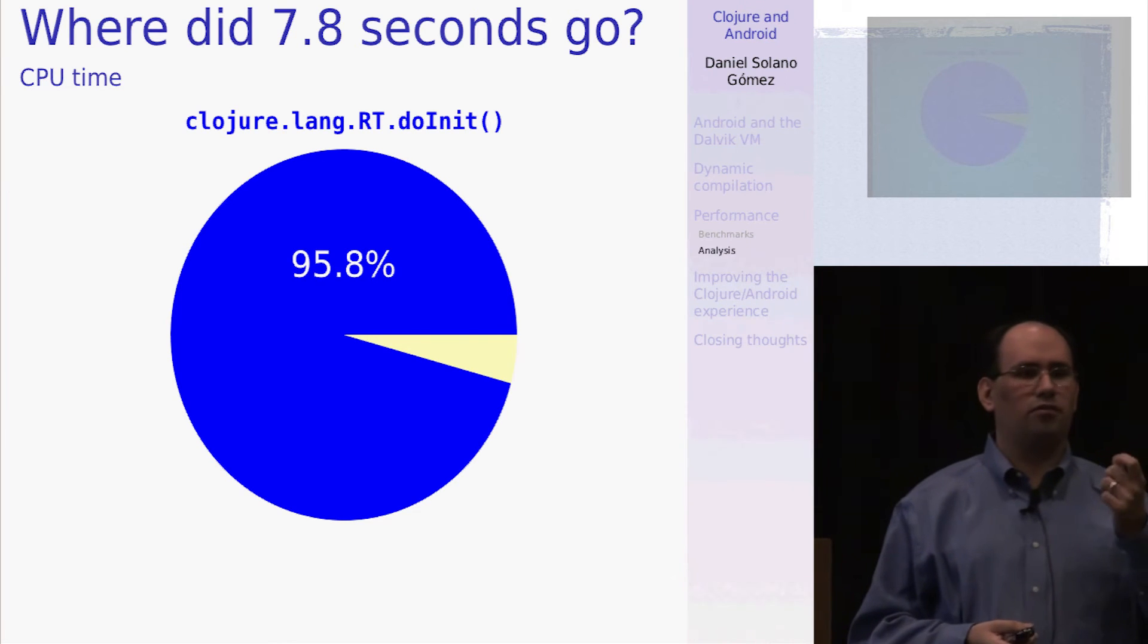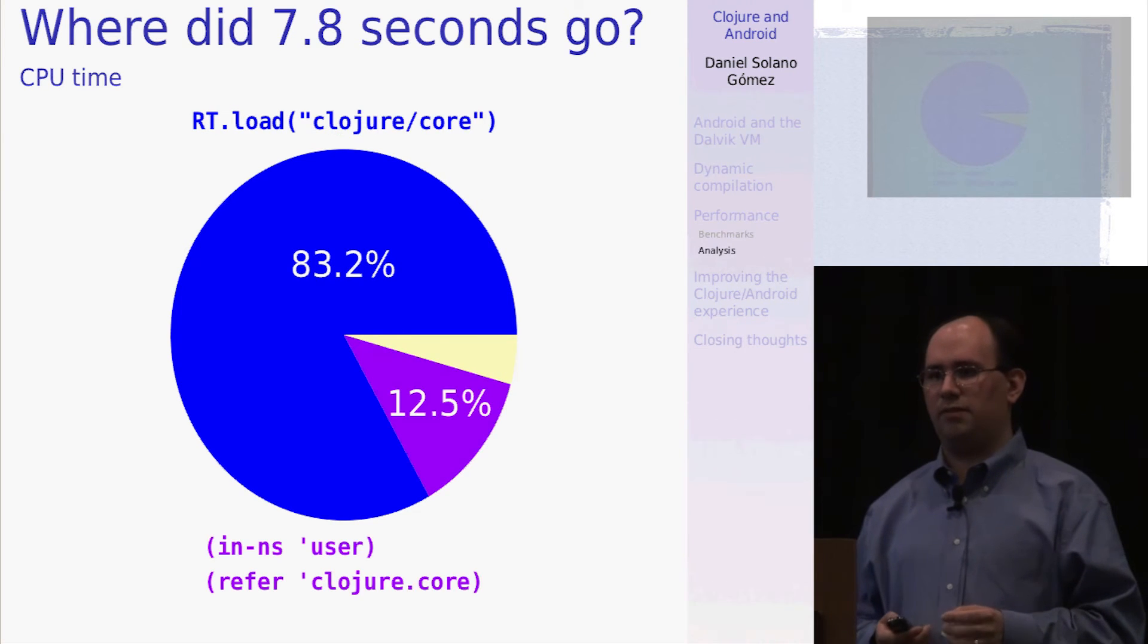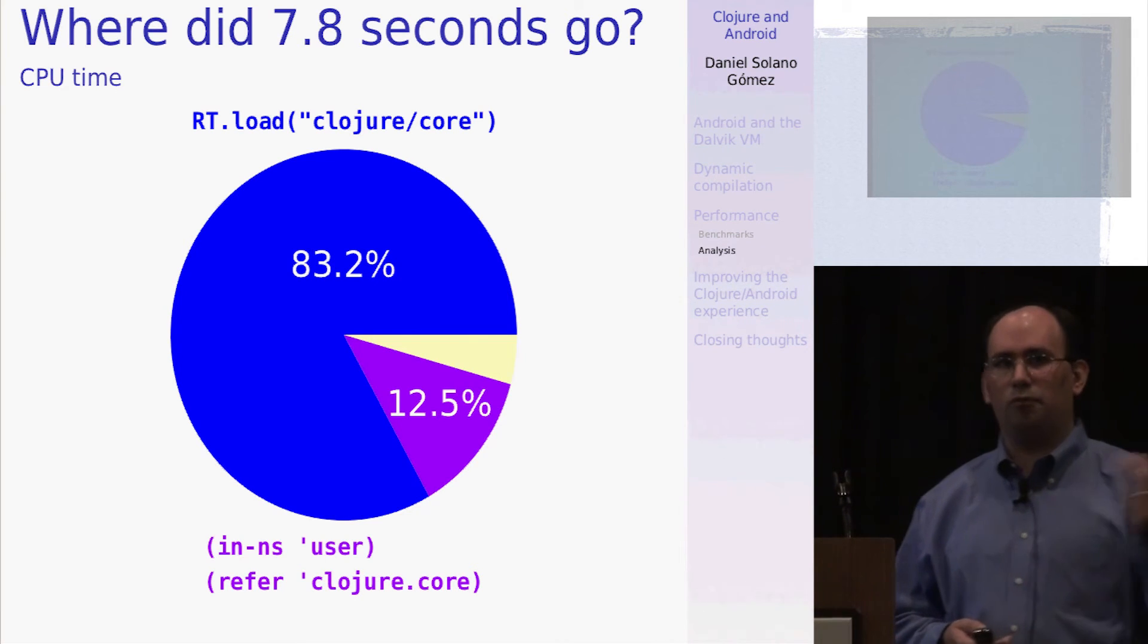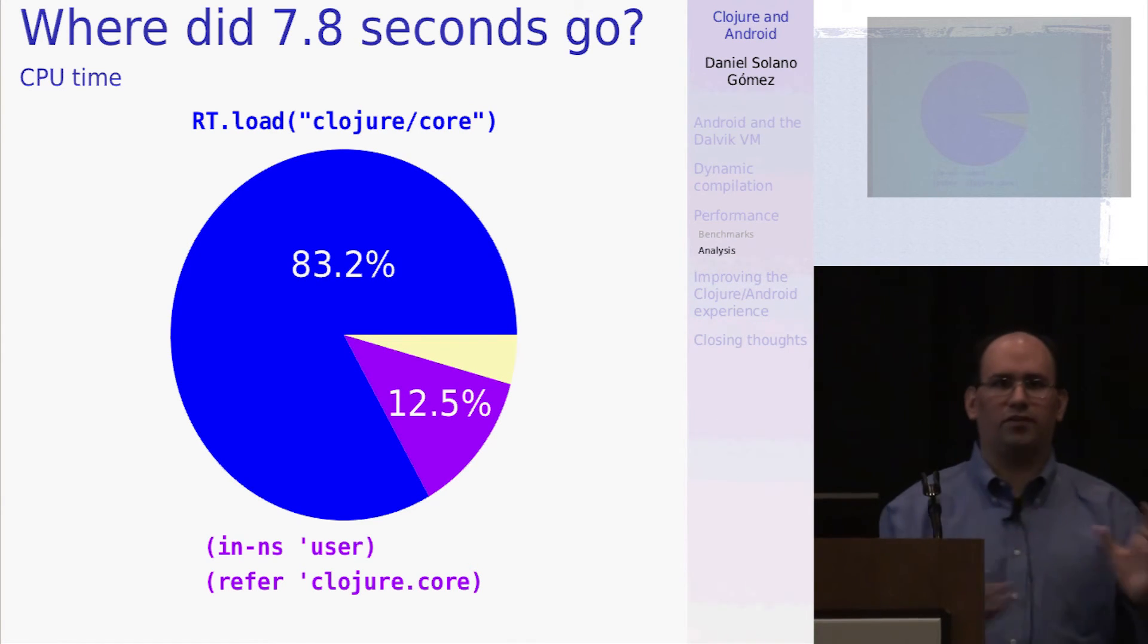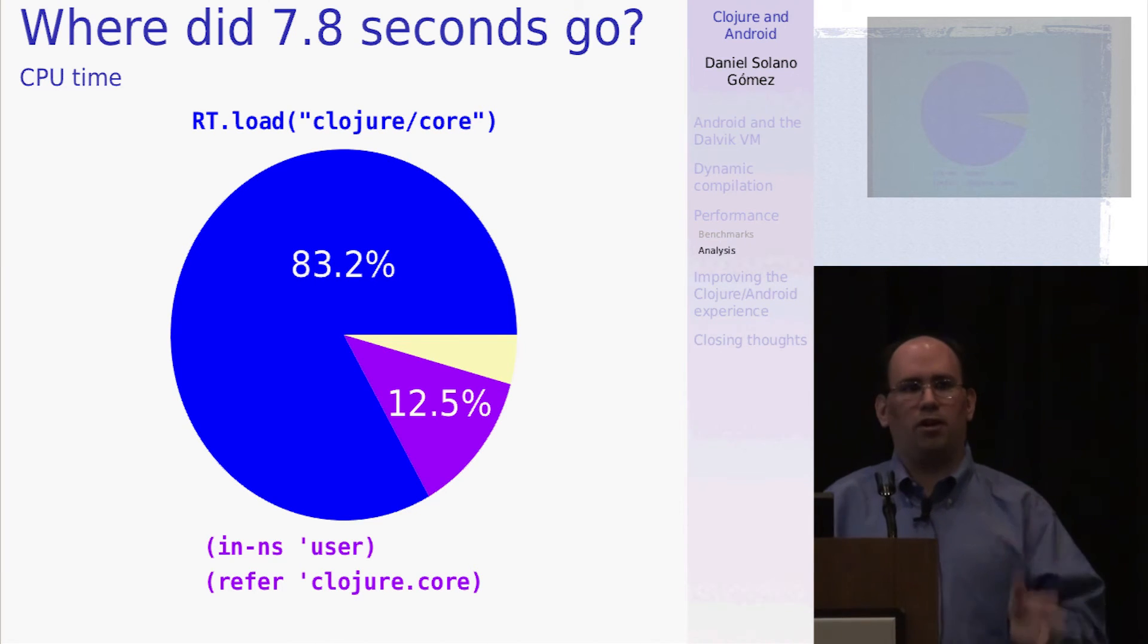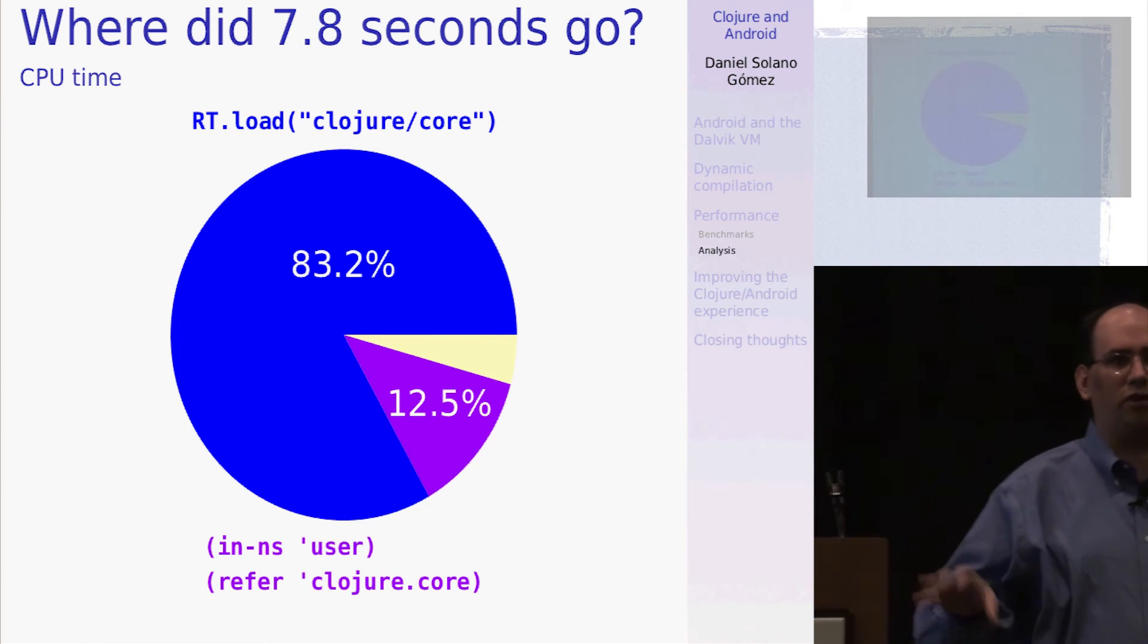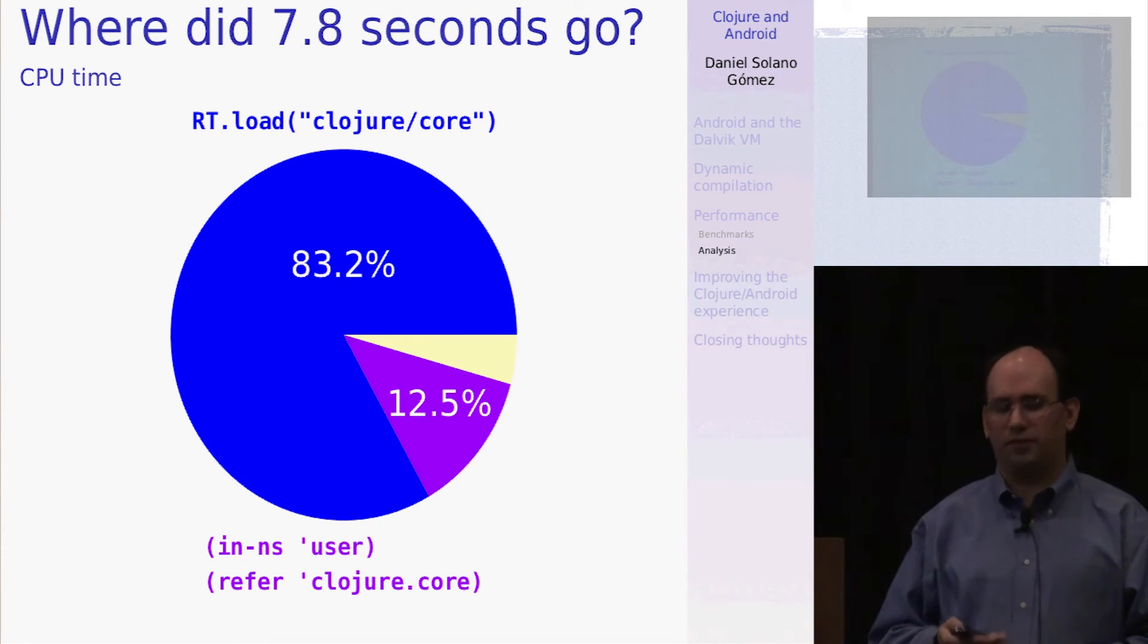So what took so long? It's loading that runtime class is what took all the time. In particular, as part of the class construction, there's a doinit method. And what that doinit method does is two different things. One, it loads the clojure core namespace, and that's something that we need and we want. But it also creates the user namespace and imports all the bindings from clojure core into that user namespace. And again, if you're working on the REPL, that's great. That gives you your place to experiment. But on your Android application, you don't really need that. And I find that commenting out those lines of code and rerunning my experiment, that it did take off about one eighth of that loading time, which was about 300 milliseconds.